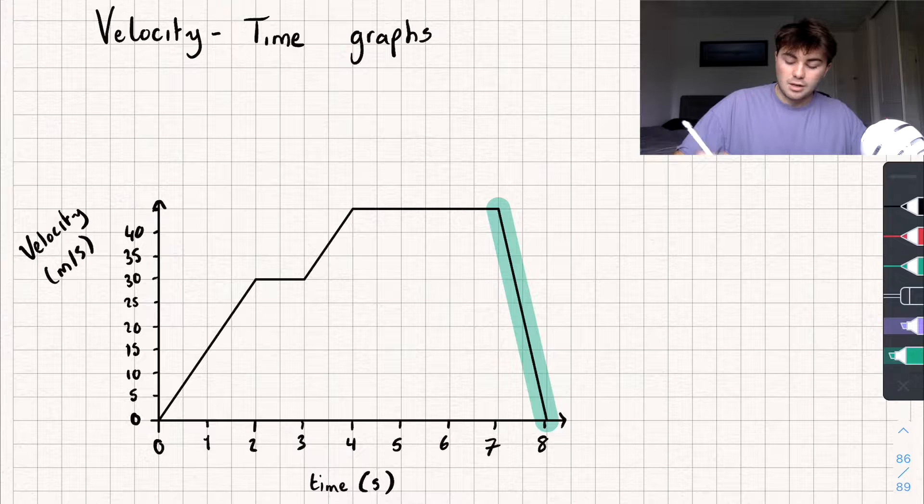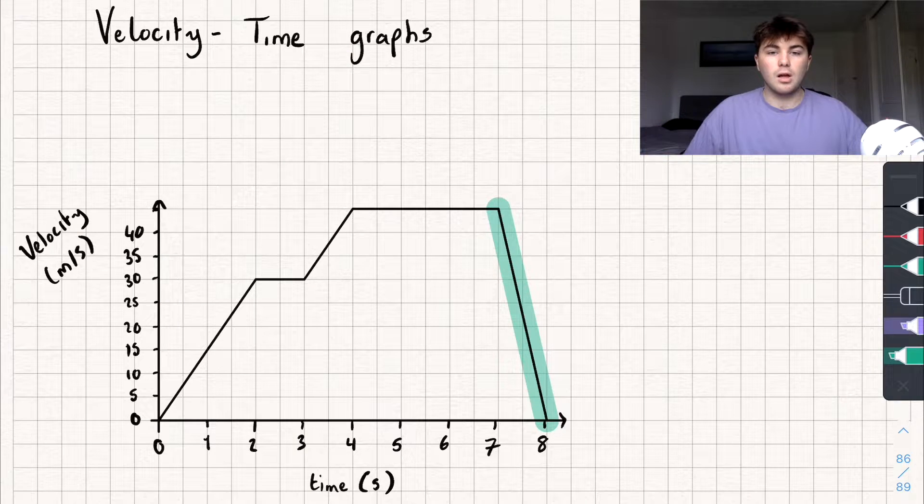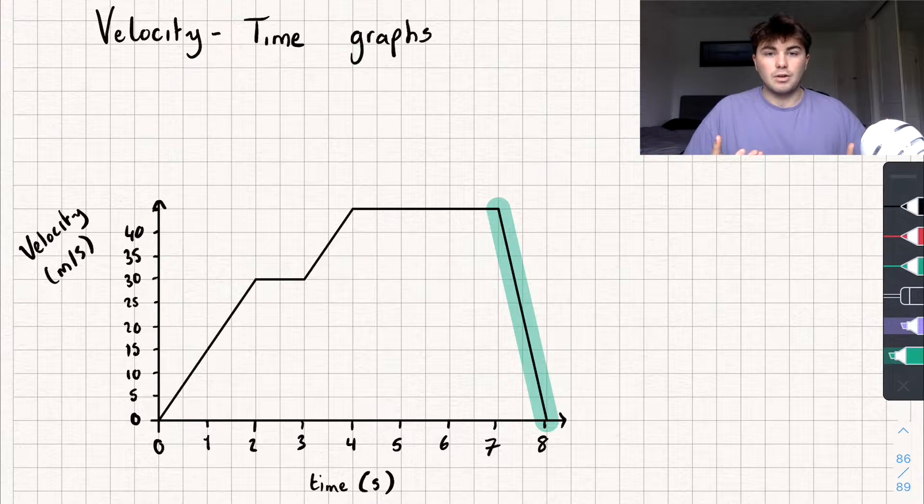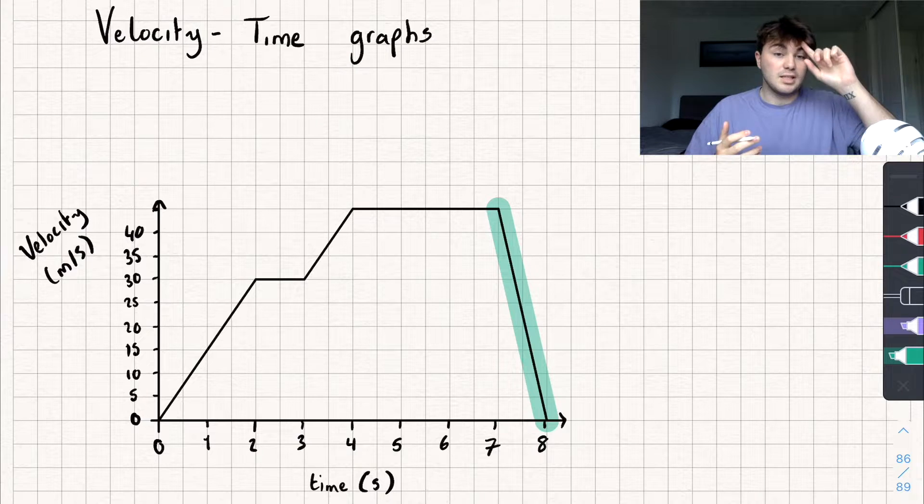And finally, if I've got a negative gradient or my graph is going down like this one I've highlighted, that shows me that I'm decelerating. I'm slowing down. My velocity is decreasing.